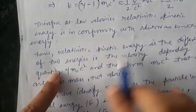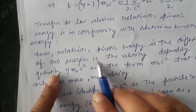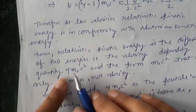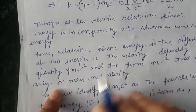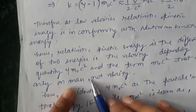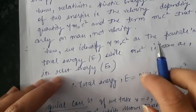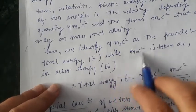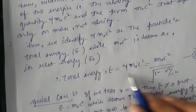Hence relativistic kinetic energy is the difference of two energy terms: γm₀c², which depends on velocity through γ, and m₀c², which depends only on mass. We identify γm₀c² as the total energy E of the particle, while m₀c² is taken as the rest mass energy. Therefore total energy E = γm₀c² = m₀c² / √(1 − v²/c²).